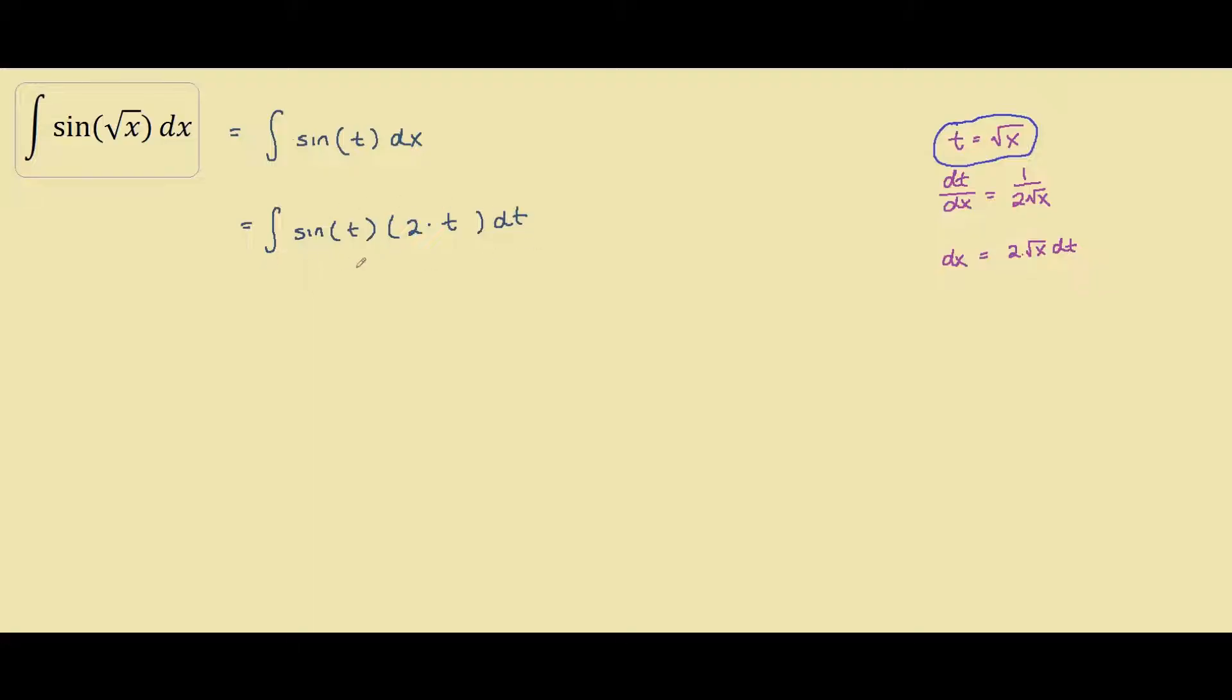And quickly rewriting this integral, we can take the 2 out as a common factor, so we're left with 2 times t times sine t dt.